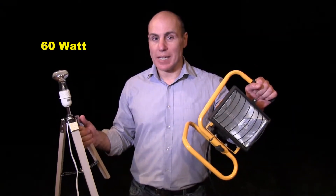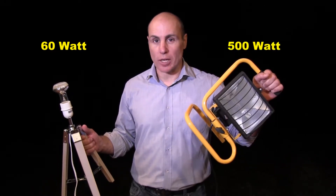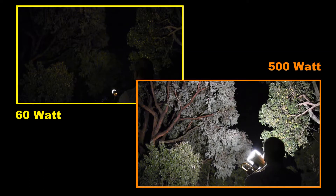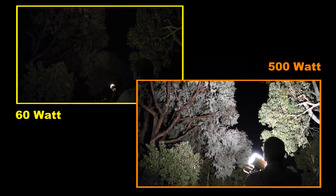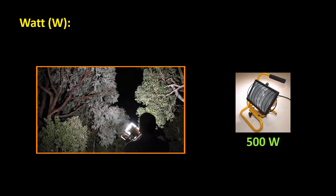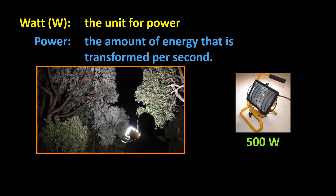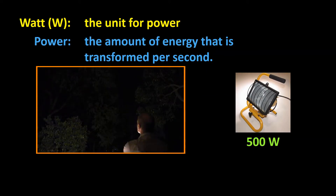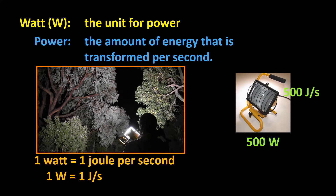This is a 60-watt incandescent light globe, and this is a 500-watt incandescent light globe. The 500-watt light globe is obviously quite a lot brighter than the 60-watt light globe. But what is a watt? What does 60 watts mean? The watt, given the symbol W, is the unit for power, and power is defined as the amount of energy that is transformed per second. So 1 watt equals 1 joule per second, and 500 watts is 500 joules per second.